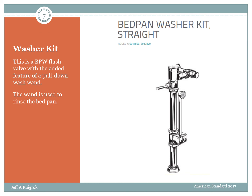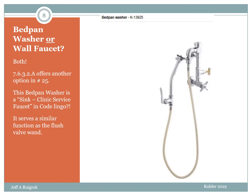This is the kit — the washer kit — just a close-up view. Again, the flush valve for flushing the toilet-like clinic service sink, and the wand that pulls down so you can spray out the bedpan. This is just like a hand spray but a rigid one. By the way, a bedpan is shaped just like a toilet seat.